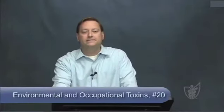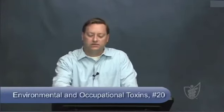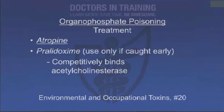The way to treat organophosphate poisoning is with atropine, which fights the symptoms. If you catch it early enough, there's also pralidoxime (2-PAM), which binds the acetylcholinesterase and competes with the toxin. You need to administer it within the first six hours, because otherwise the toxin irreversibly binds the acetylcholinesterase.